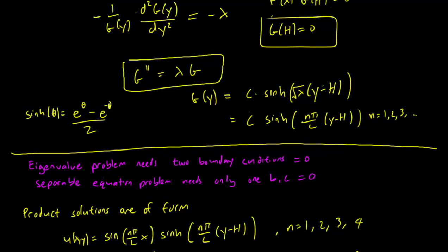But then we know that the product solutions must be of the form sin(n pi over l times x), which is our f(x), times sinh(n pi over l times (y minus h)), which is our g(y). We set c equals 1 for convenience, and this is for n equals 1, 2, 3, 4, and so on.